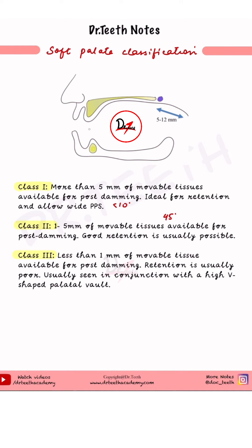Class 3 has less than 1 mm of movable tissue. This particular area is very small, just 1 mm or less. The retention is usually poor, and the angulation is around 70 degrees.